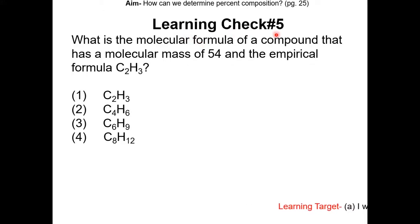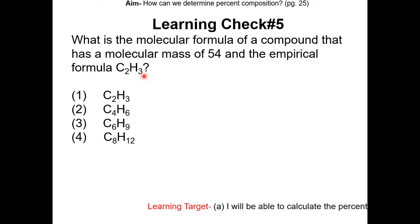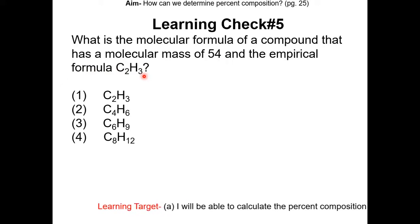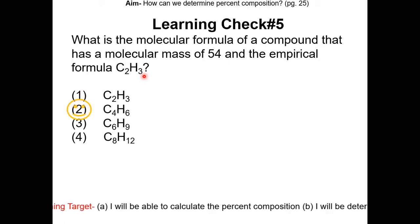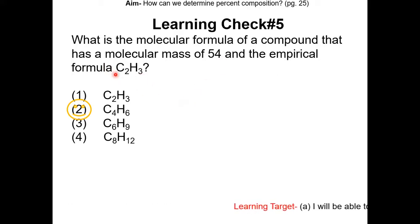Learning check number 5: what is the molecular formula of a compound that has a molecular mass of 54 and an empirical formula of C2H3? Pause the video and resume once completed. The answer is choice 2. The GFM of the empirical formula is 27. Since 27 is half of 54, you double the empirical formula to get the molecular formula.